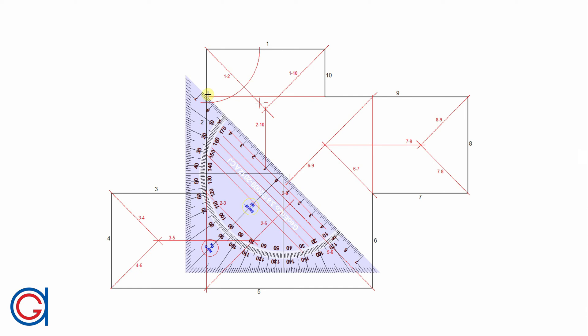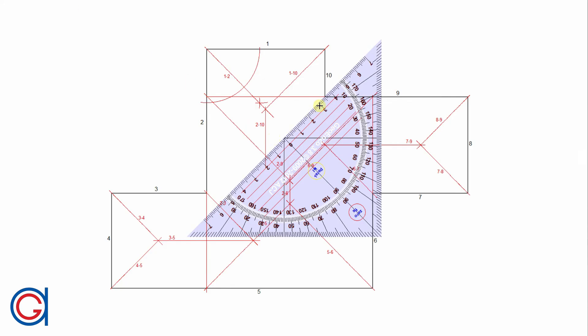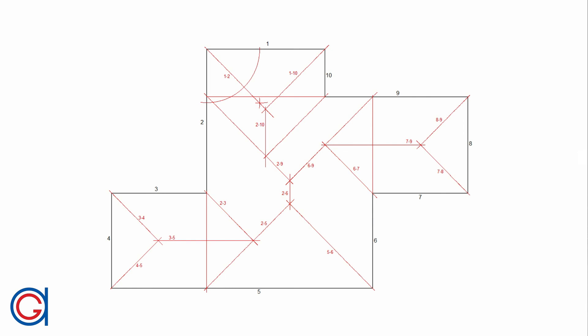This new hip line 2-9 forms a 45 degree angle, and it intersects the ridge 2-10 at another new point. As always, we remove the repeating number — in this case number 2 — and keep the other two numbers 9 and 10. This will be the missing bisector: the valley line of edges 9 and 10. This is the last line of the roof.